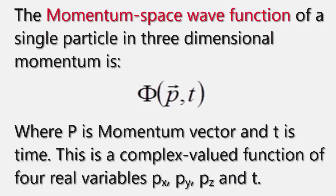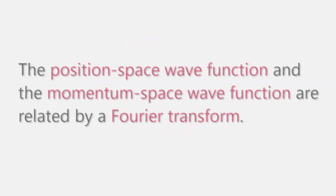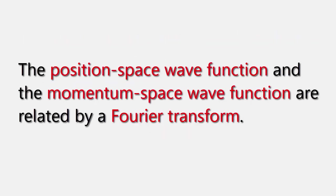The momentum space wave function of a single particle in three-dimensional momentum space is φ(p, t), where p is the momentum vector and t is time. This is a complex-valued function of four real variables. The momentum space wave function in one dimension is φ(p, t). The position space wave function and the momentum space wave function are related by Fourier transform.